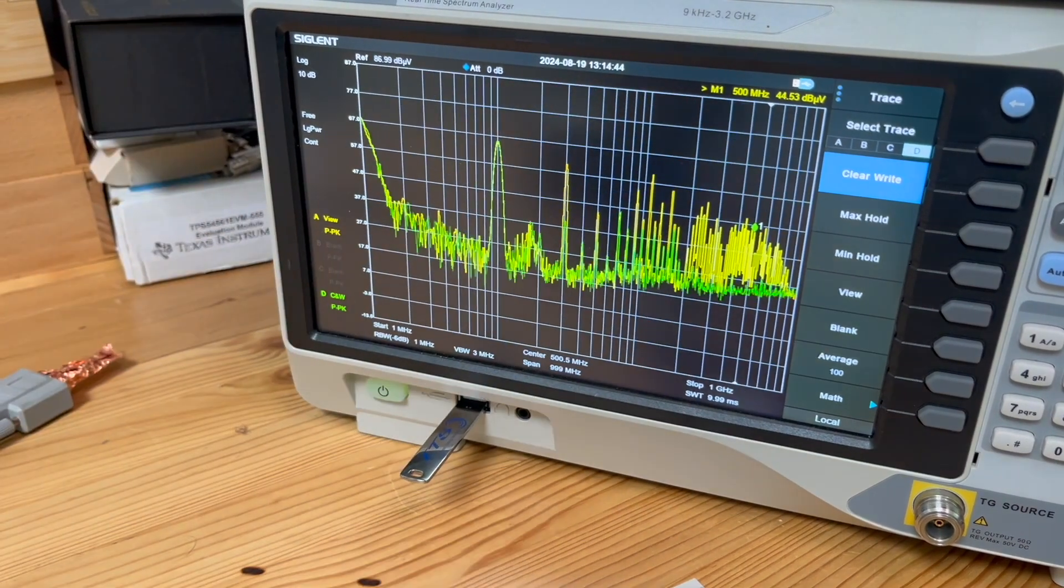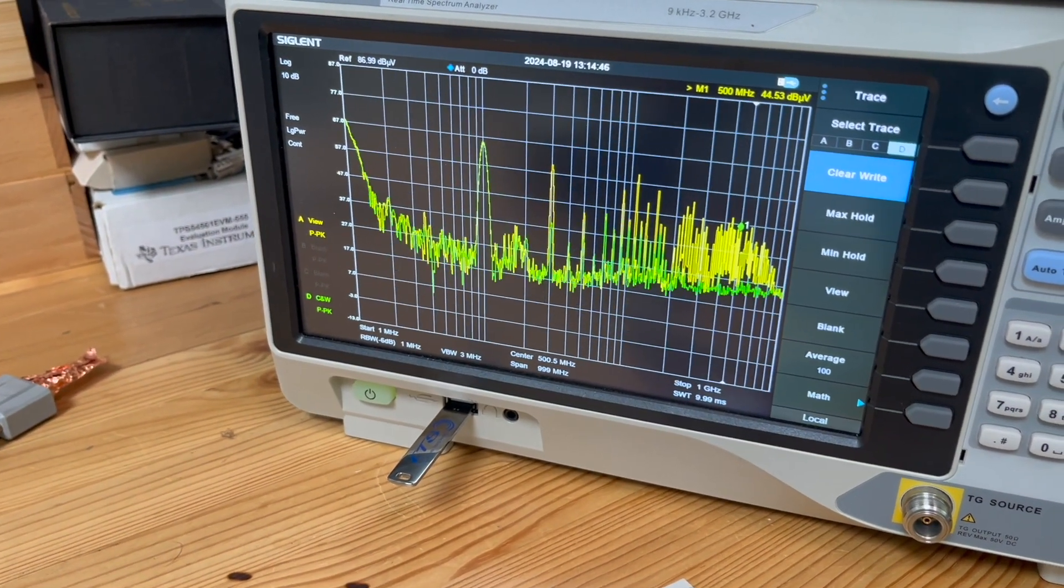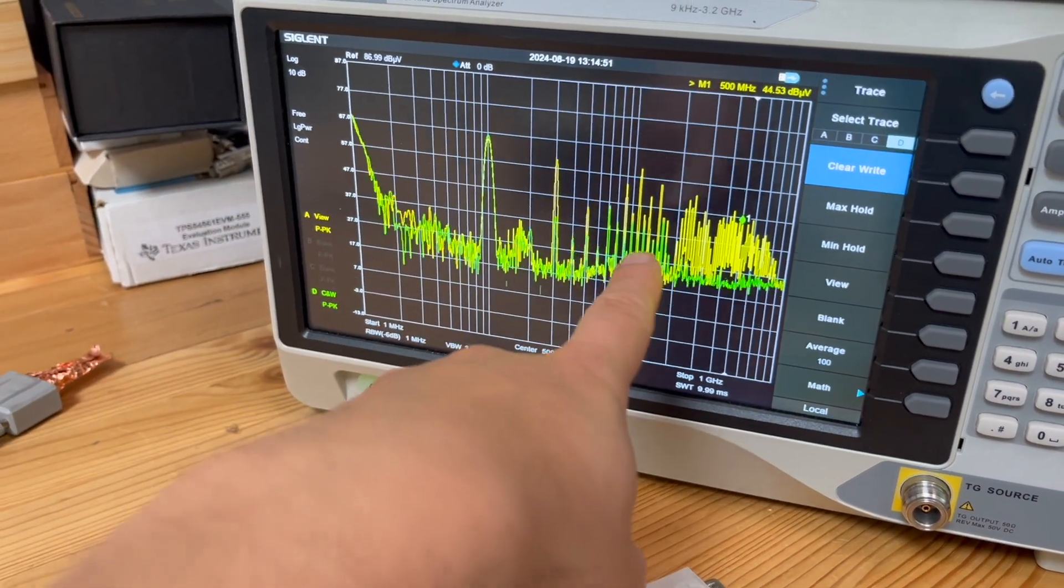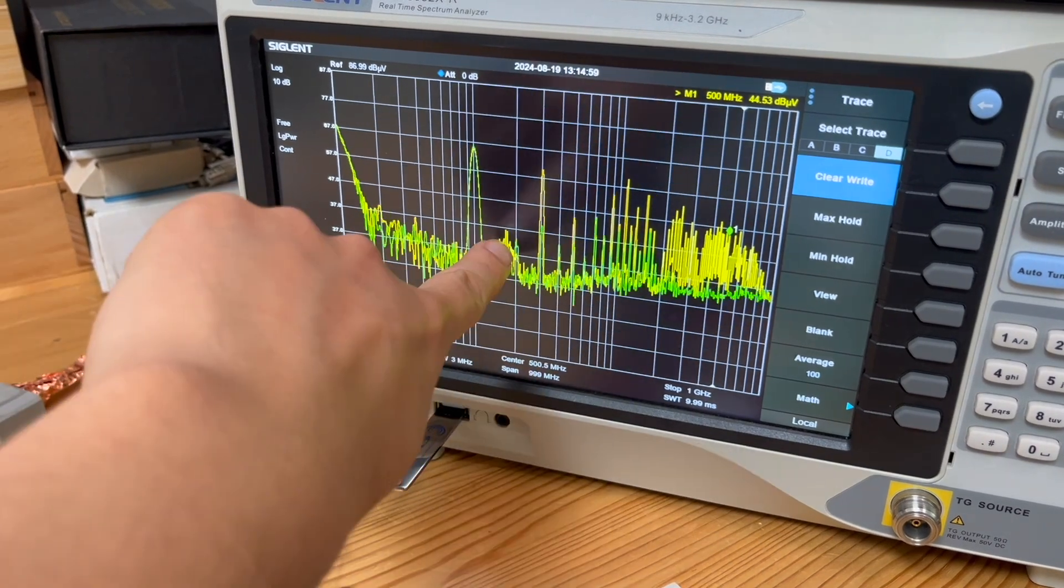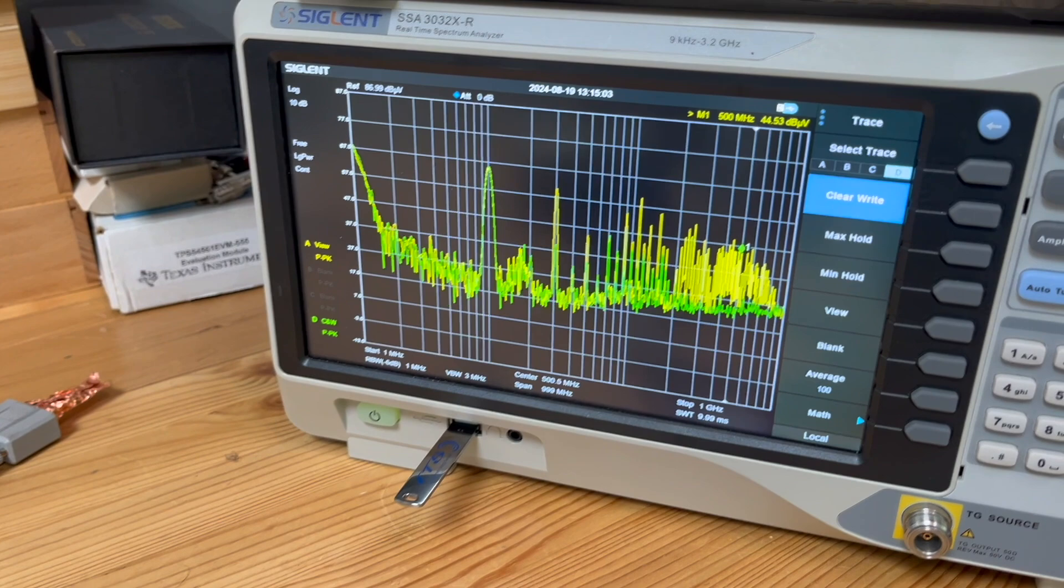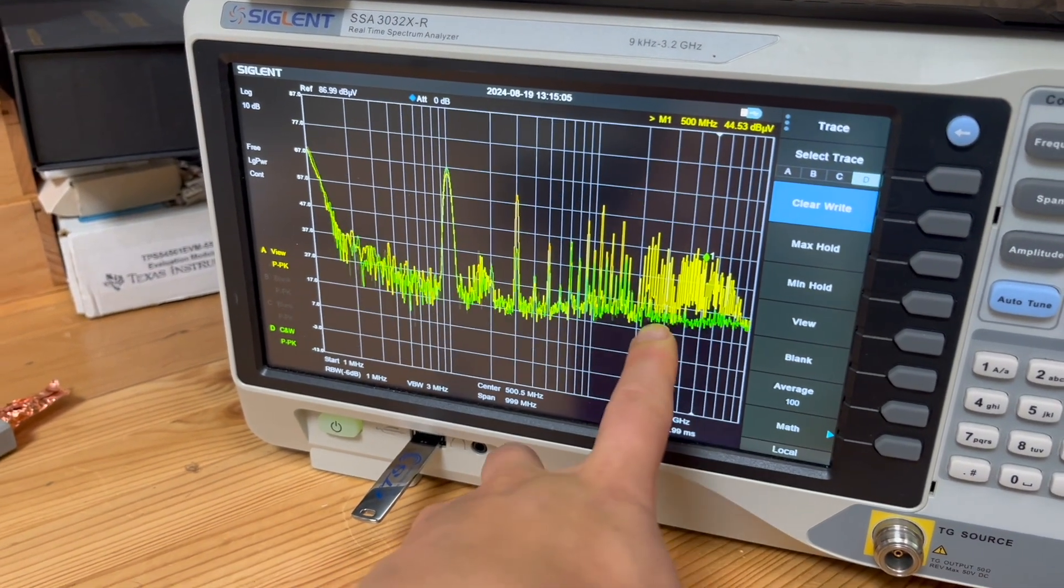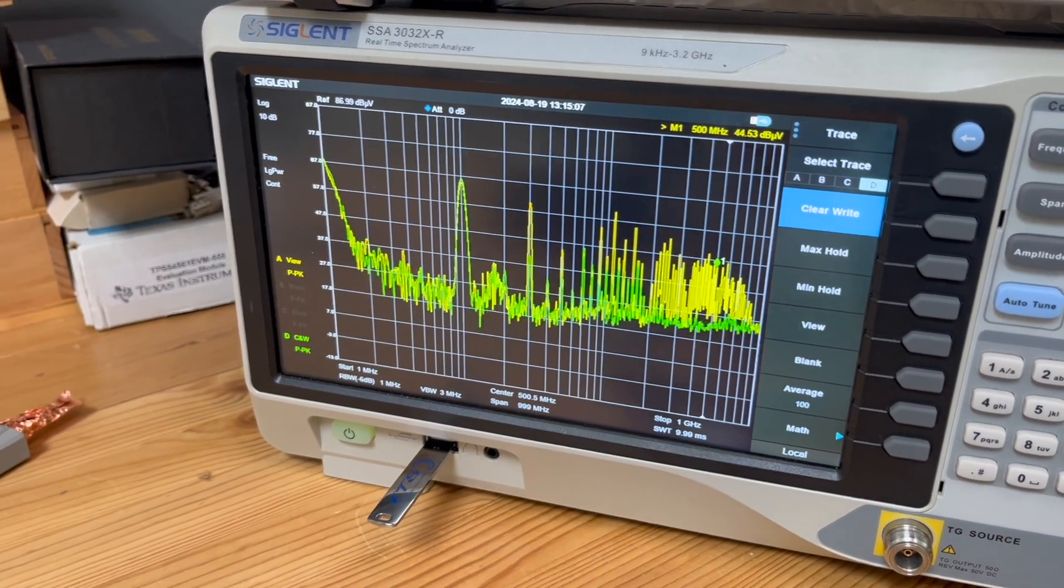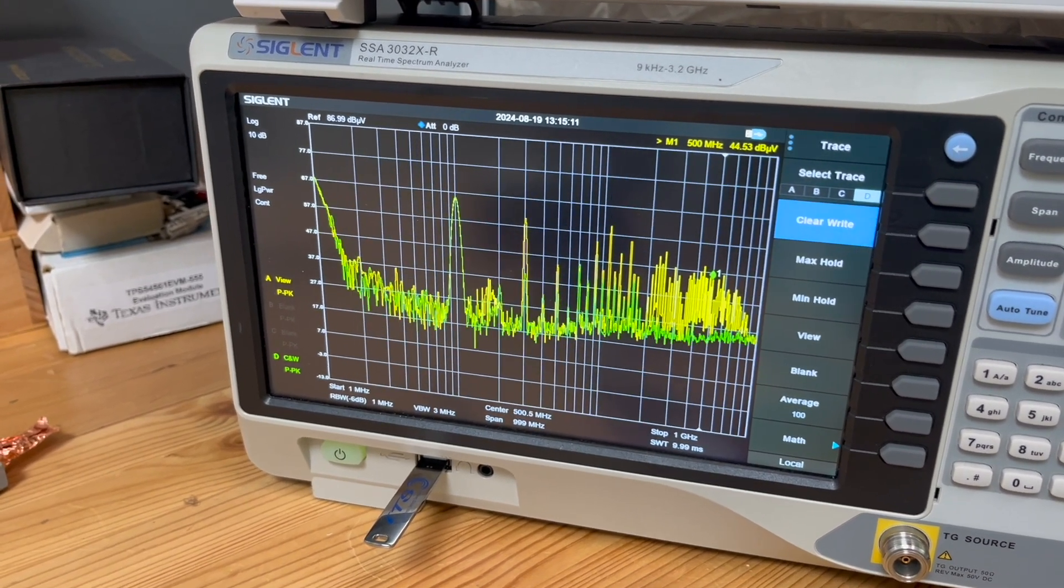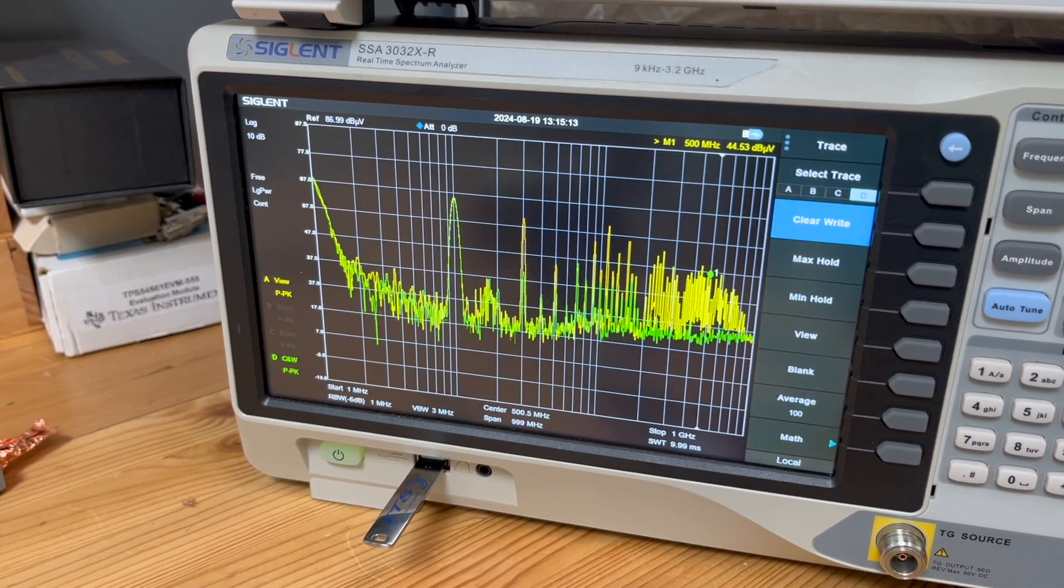So the green trace is with the seal, and the yellow trace is without the seal. So it's very interesting. You can see a really good noise reduction, from 20 MHz all the way you can see a broadband reduction, especially I would say in a higher frequency range, where more than 20 dB reduction is achieved by having this filter component.